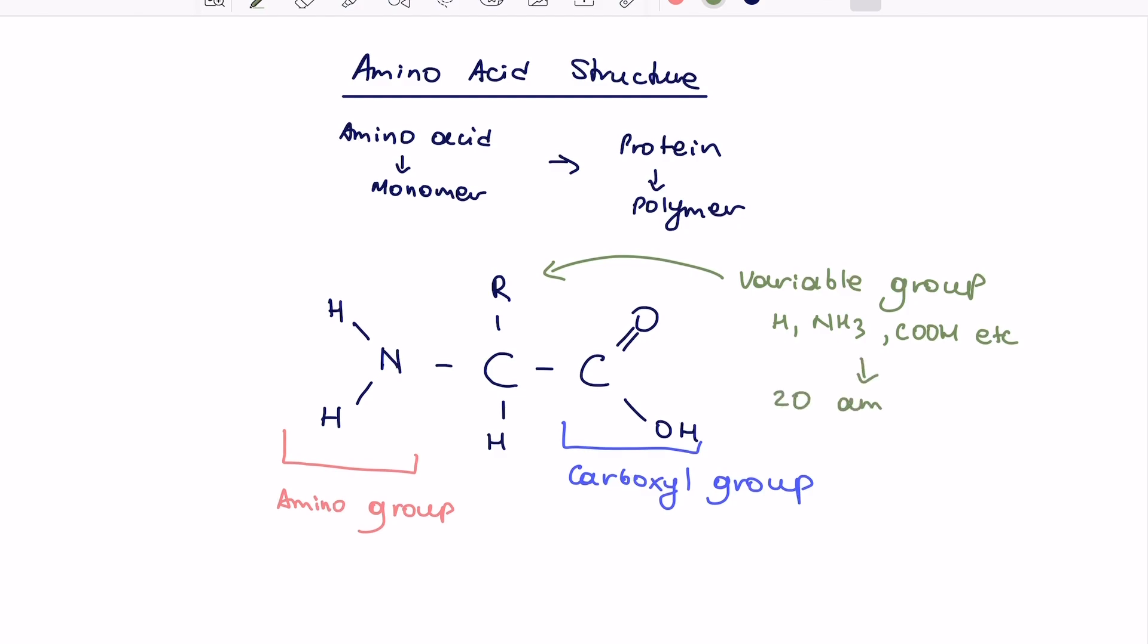The variation of those groups is what gives the variety to amino acids, and in nature we have in total 20 amino acids, which you're not required to know for A-level unless you want to go and study molecular biology at university. This is the structure of amino acid that you need to learn, so please do so, and let's jump into the next topic.